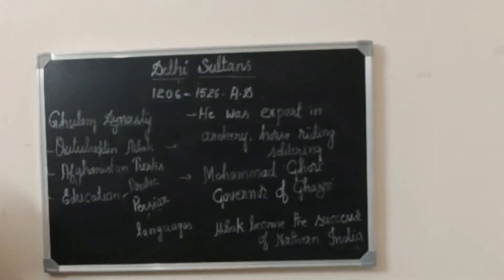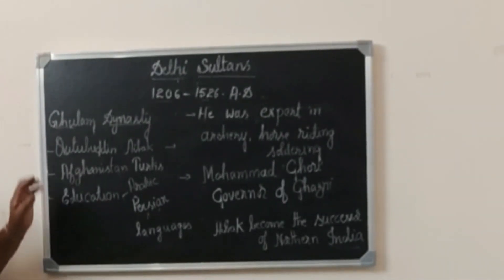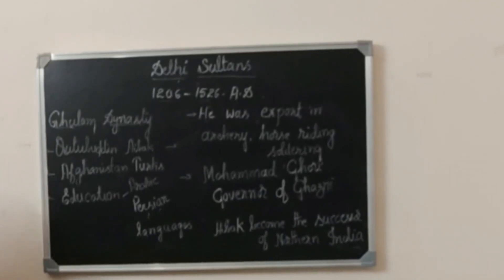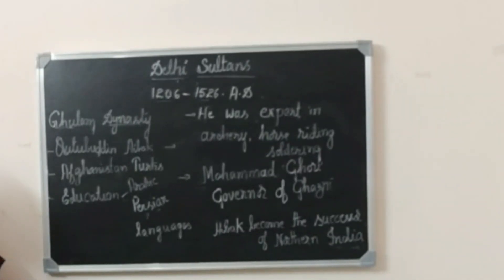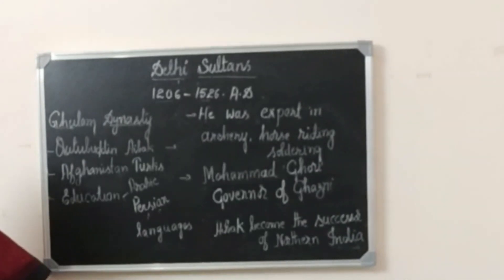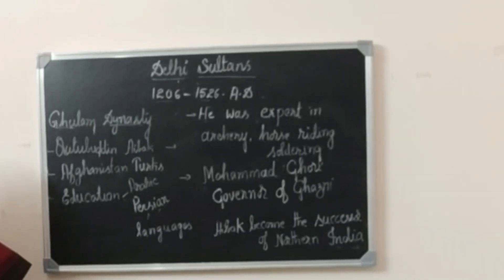Now let us try to understand the Kulam Dynasty or Slave Dynasty. The founder of the Slave Dynasty was Qutb-ud-din Aibak. He belonged to the family of Akhanstha Turks. He was educated in Arabic and Persian languages. He was expert in archery, horse riding, and soldiering. Muhammad Ghori was the Governor of Ghazni, and he purchased Qutb-ud-din Aibak as a slave.